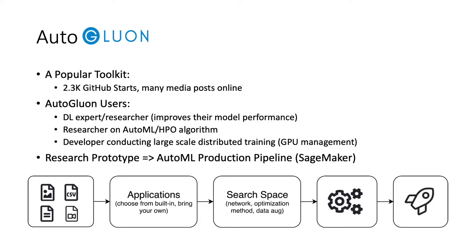AutoGluon is a popular toolkit which has attracted more than 2000 stars on GitHub and has many media posts. AutoGluon can attract users with different backgrounds. For example, deep learning experts or researchers can use AutoGluon to improve their model performance. Researchers on AutoML and HPO algorithms can quickly prototype their ideas using AutoGluon to conduct experiments. Developers using AutoGluon can start large-scale distributed training with GPU management. Furthermore, AutoGluon bridges the gap from research prototype to AutoML production pipeline and can be directly deployed on SageMaker.